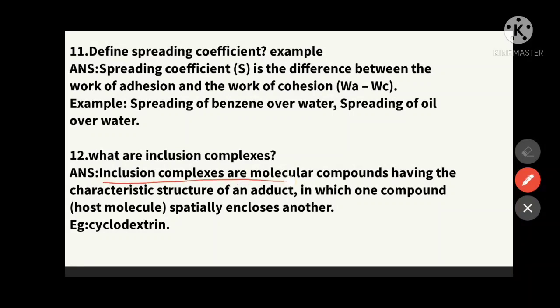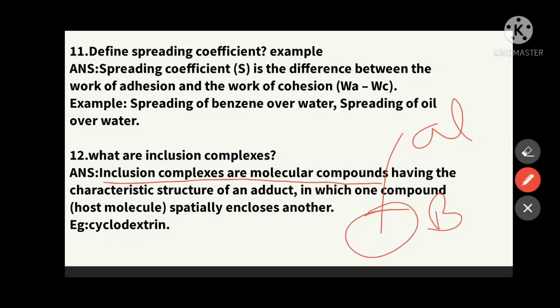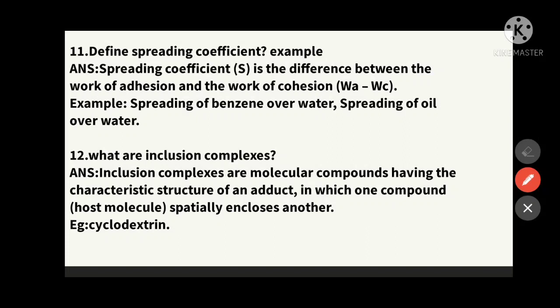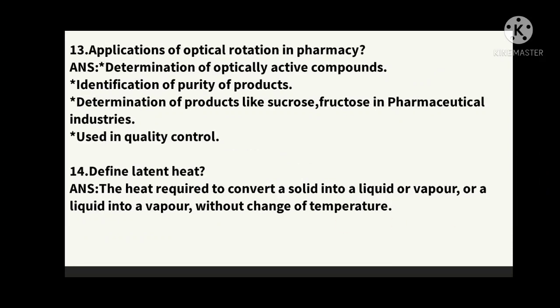The twelfth question: what are inclusion complexes? Inclusion complexes are molecular compounds having a characteristic structure in which one compound spatially encloses another compound. For example, benzene spatially encloses another compound like alkanes. 'Inclusion' means one compound is included within another. Example: cyclodextrin — cyclo is one part, dextrin is another — it is an inclusion complex.